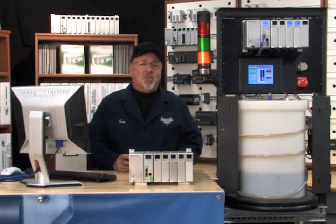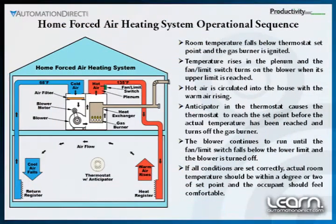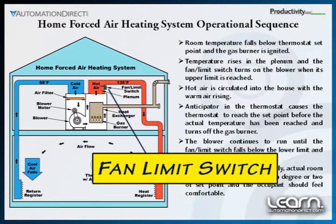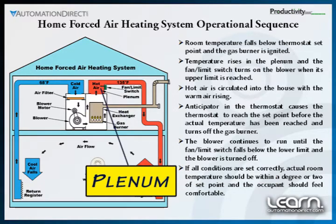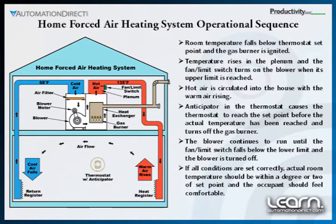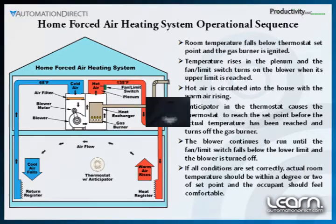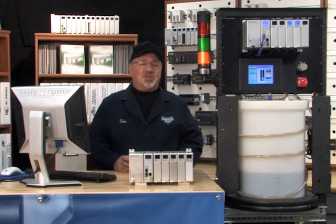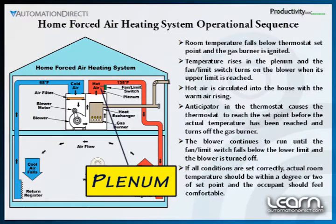To better understand the operation of the home heating system and get a better feel for what a PID loop controller can do, be aware that there is normally a fan limit control switch in the heating system. This allows the air in the plenum — a chamber above the heat source — to reach a certain temperature before the blower kicks on to force the heated air throughout the home. The fan limit switch prevents unpleasant cold air from being felt by the occupants and explains the lag between when the furnace's burner turns on and when the blower kicks on. Because of this condition, the system stores extra heat in the plenum, which would cause the room temperature to overshoot the desired temperature.